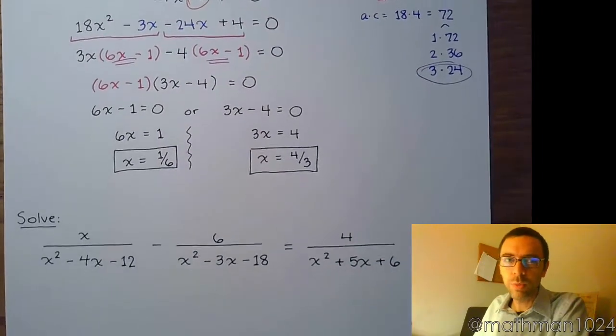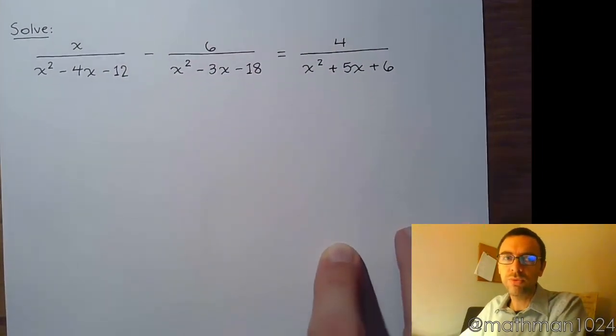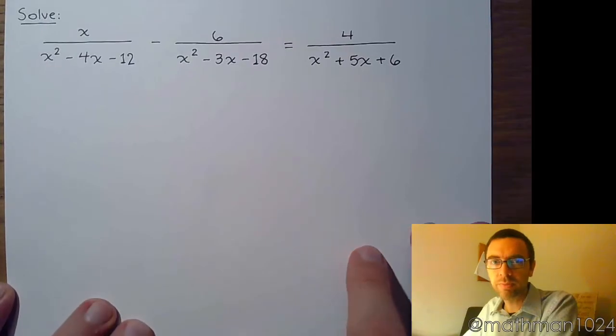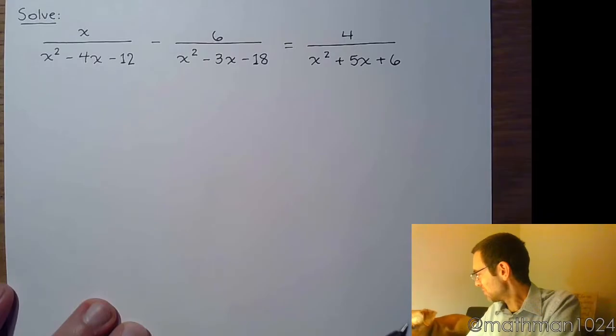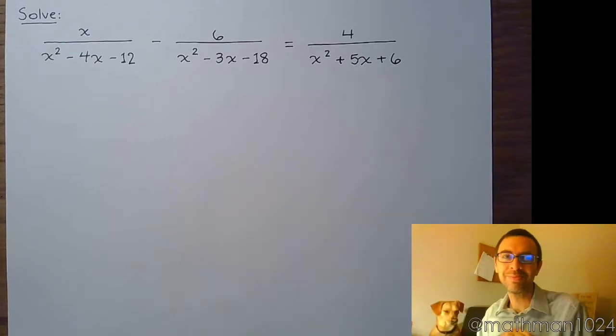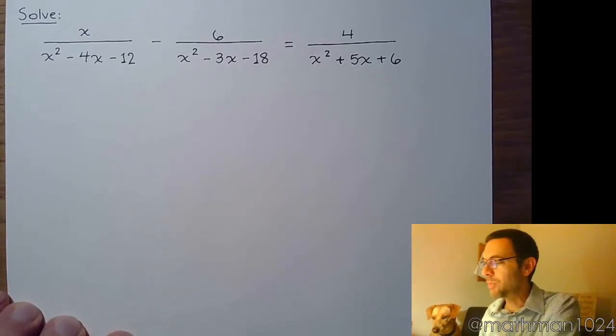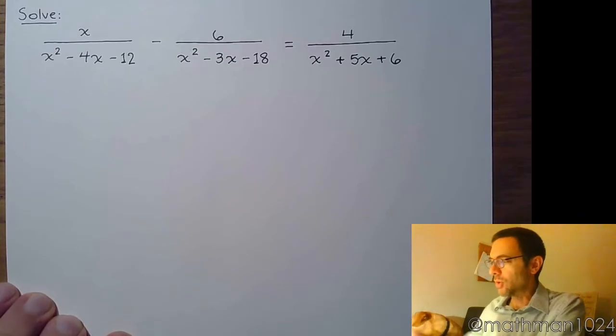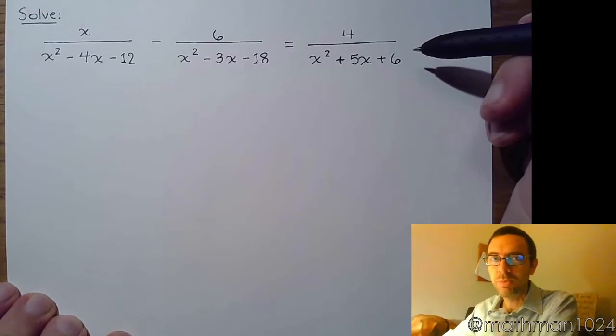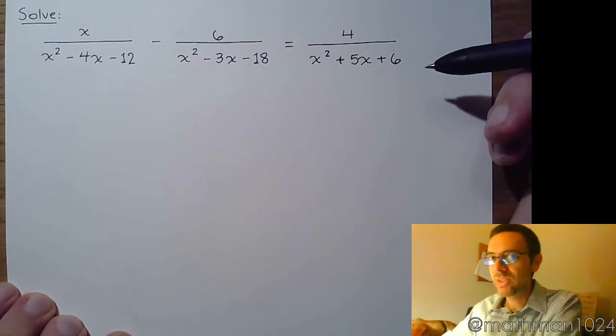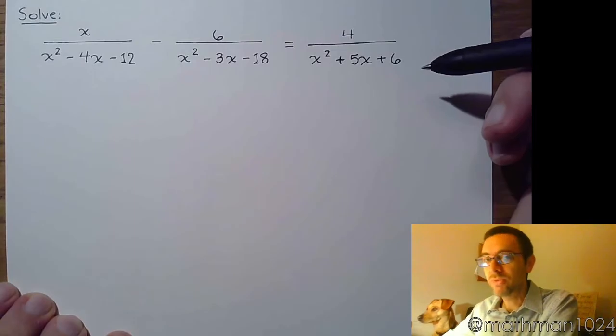Let's do one more, one with fractions because we know everybody loves fractions. So the key thing here is that you want to get rid of the fractions by clearing them away and making sure that everybody has the same denominator. Which means we have to first factor everything.